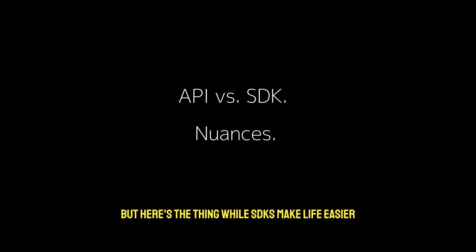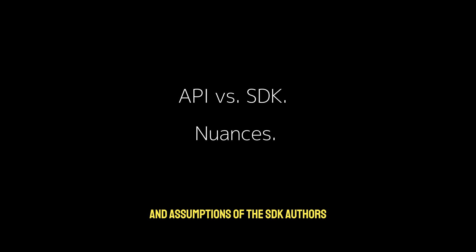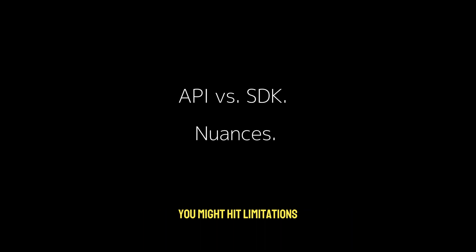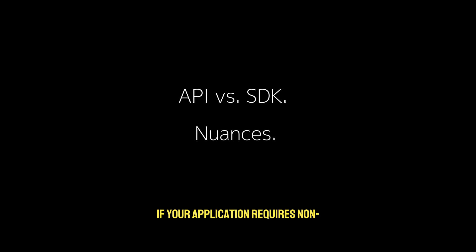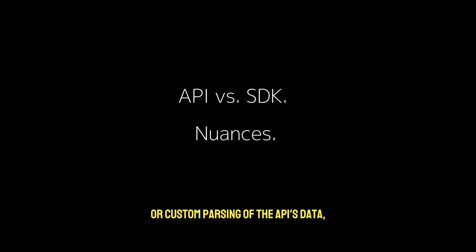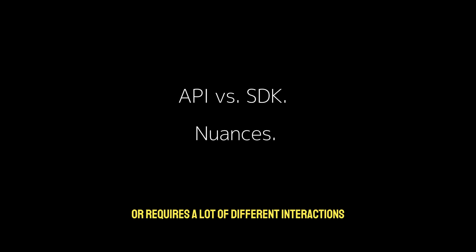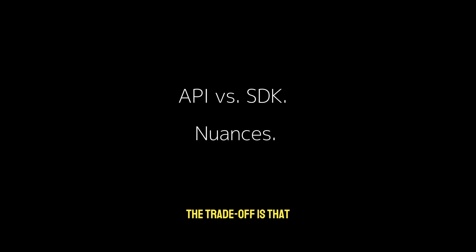But here's the thing: while SDKs make life easier, they also lock you into the patterns and assumptions of the SDK authors. If the SDK does things in a way that doesn't fit your architecture or project structure, you might hit limitations. Custom API integrations give you full and complete control — you can structure the calls exactly how you need them. If your application requires non-standard authentication or custom parsing of the API's data, you can build that logic yourself. However, if the API is complex or requires a lot of different interactions, the SDK will save you significant time. The tradeoff is that you're trading off some flexibility for ease of use.